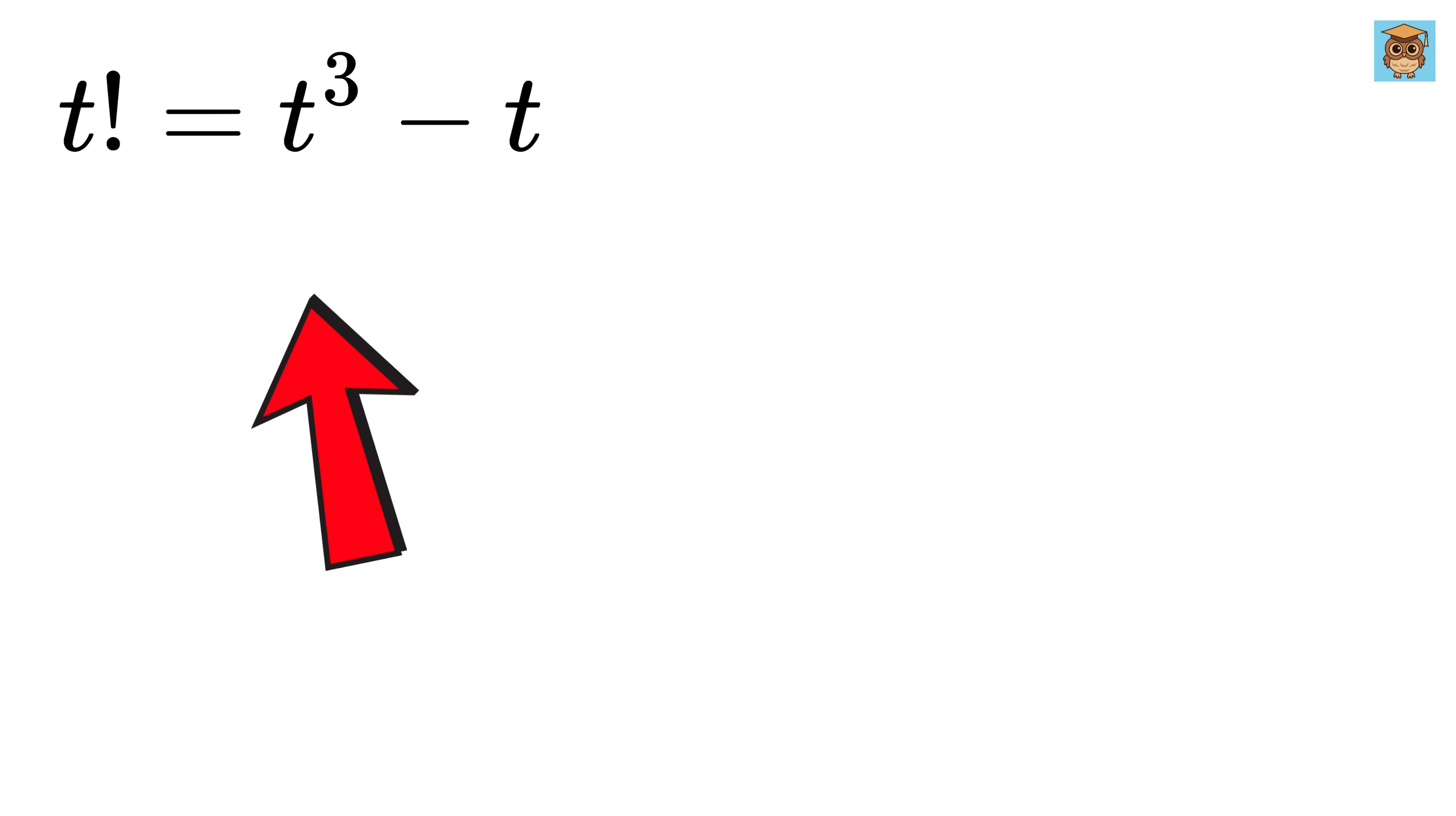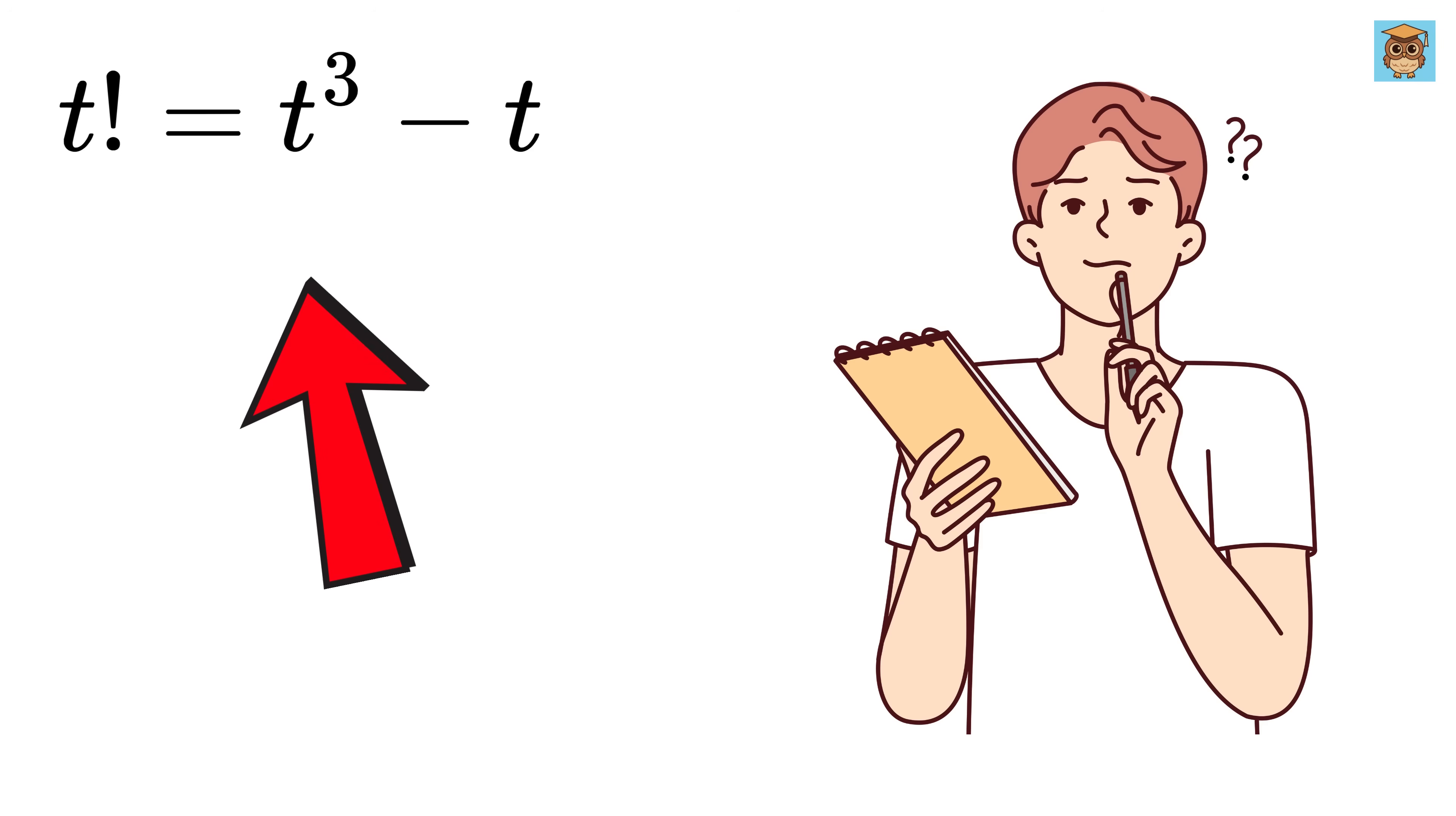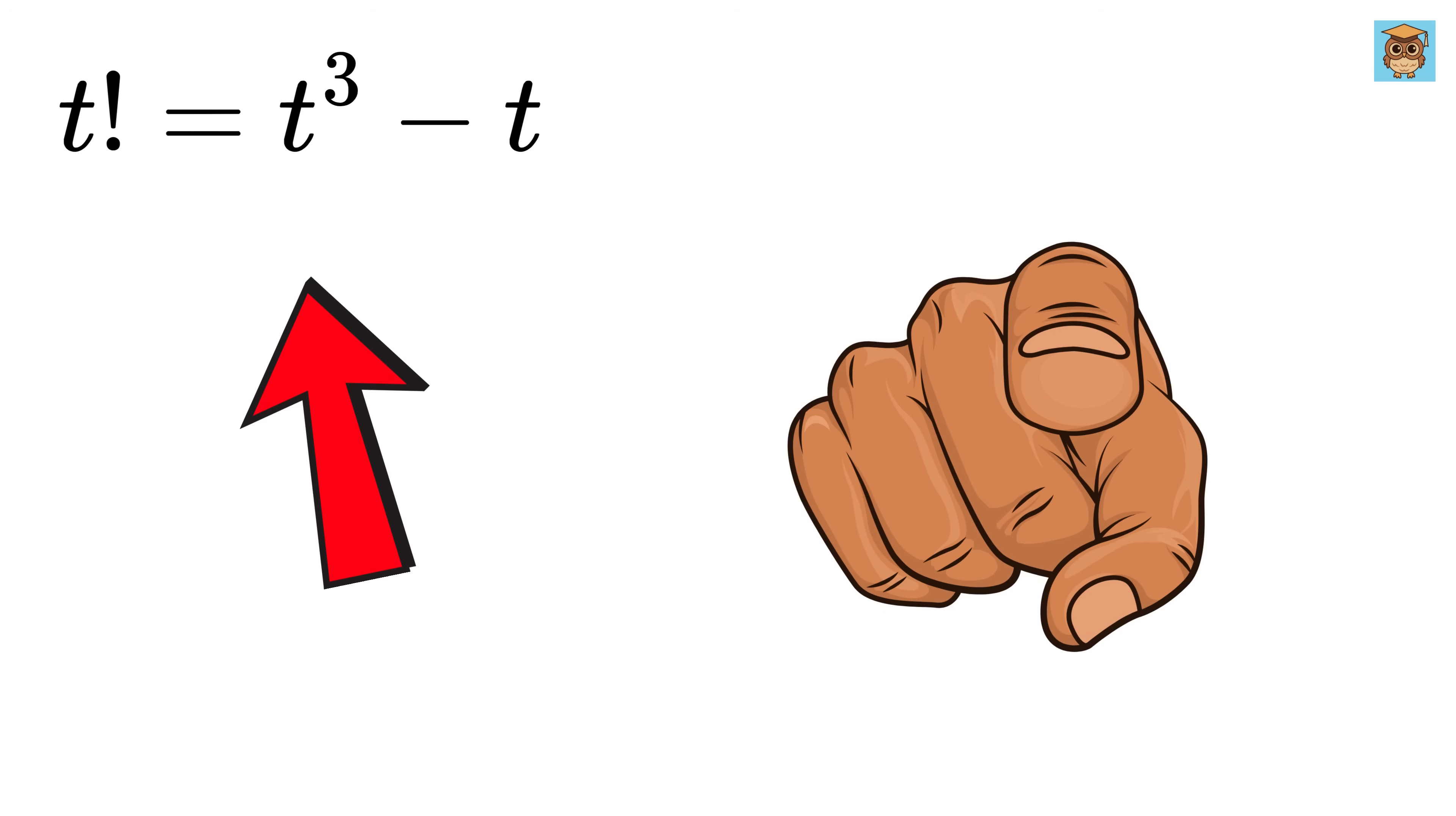t factorial equals t cube minus t, and our job is to solve for t. Can you solve it?